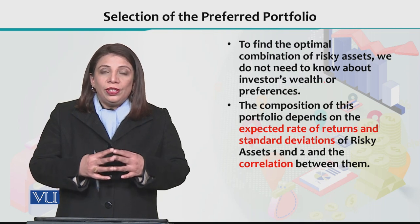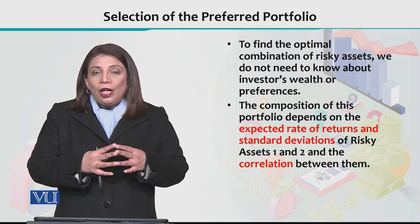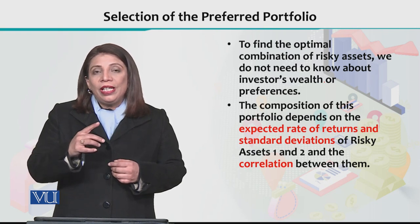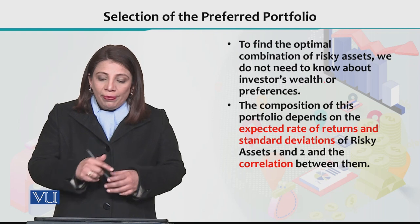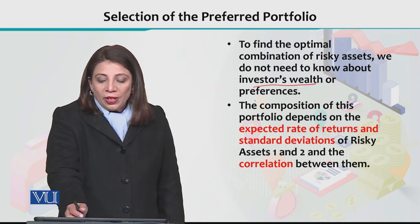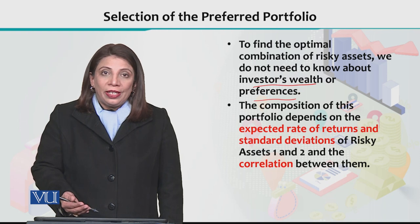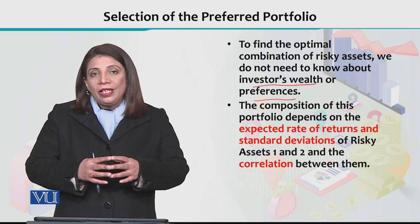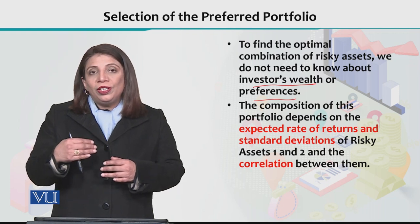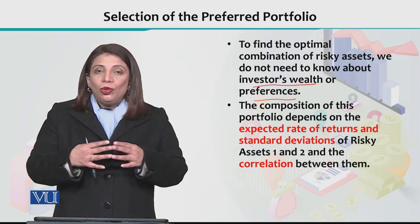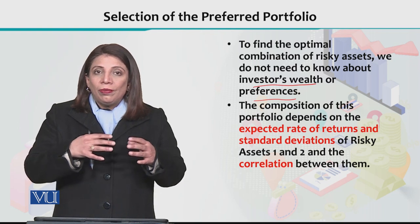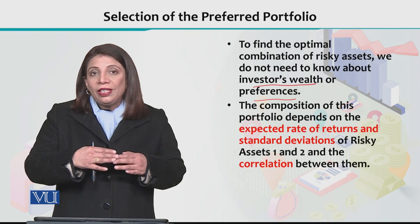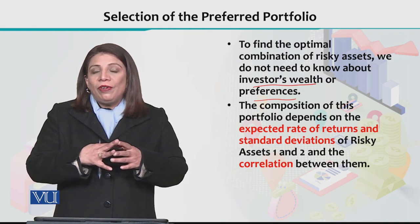When we have to choose the optimal combination from among the many combinations between F and T, the investor's wealth or personal characteristics do not count. You do not need to consider the full details of every individual investor when defining portfolios for them. How much wealth an investor has does not matter.